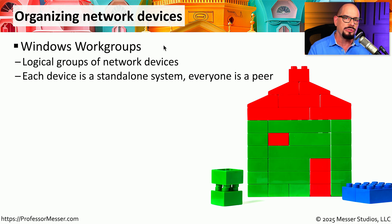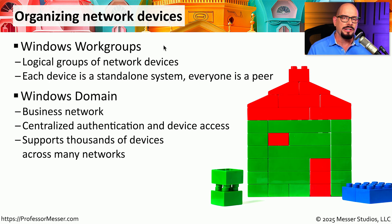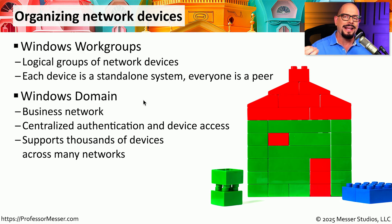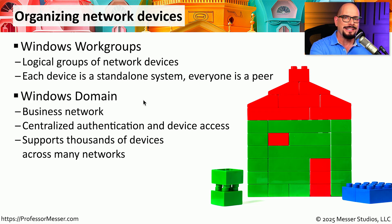But everybody in that workgroup maintains their own set of usernames and passwords. This means that a username and password you would use to connect to a printer on one device might be different than the username and password that you use to share a drive on a different device. This can really complicate the process of keeping track of usernames, passwords, and other credentials. To consolidate everything into one single group of credentials, you might want to use a Windows domain. This is the common configuration for a business or enterprise where they want to consolidate all of these usernames, all of the devices, and all of the available resources into one single view, meaning you only need to remember one set of user credentials and don't need a different login for every individual device on the corporate network. This also means that your IT support team can go to one central place to manage all of these users and devices, which is incredibly useful when you have hundreds or even thousands of devices to manage.